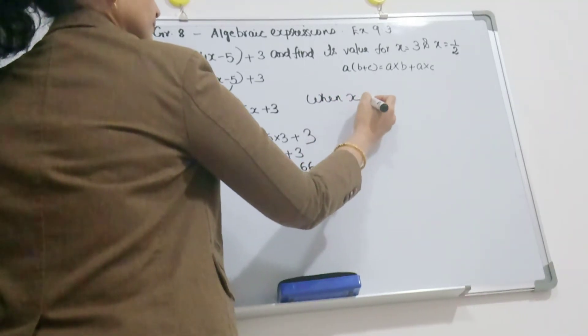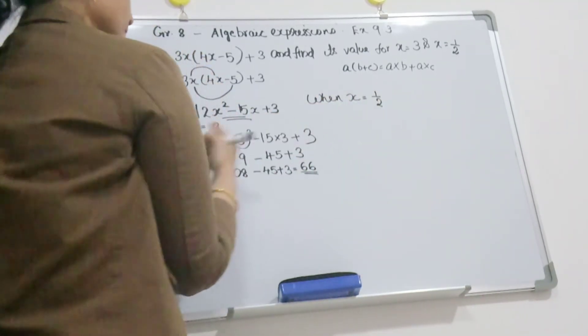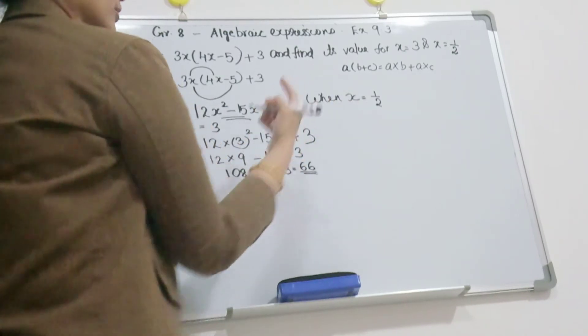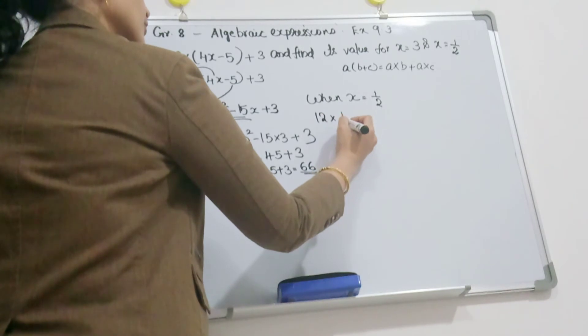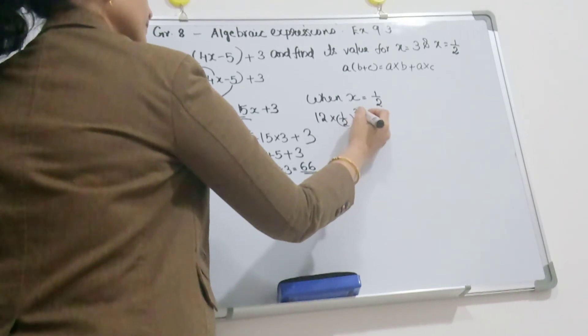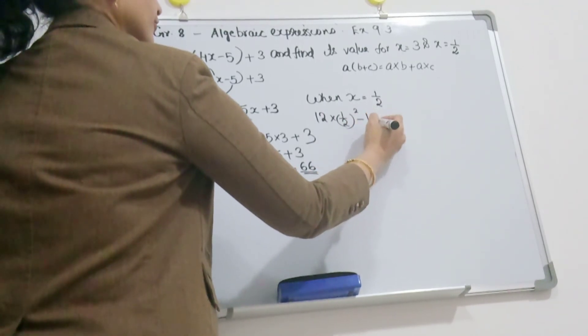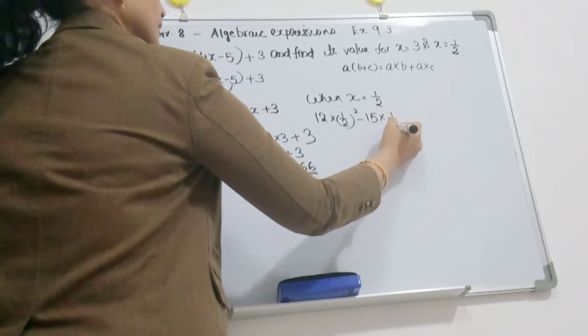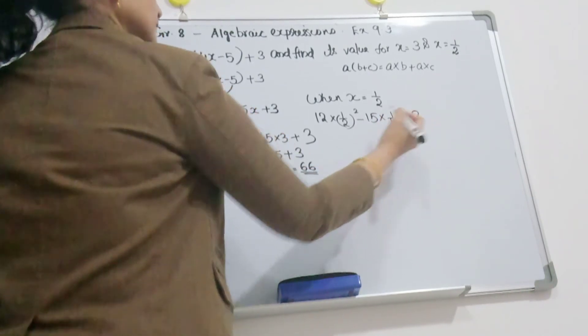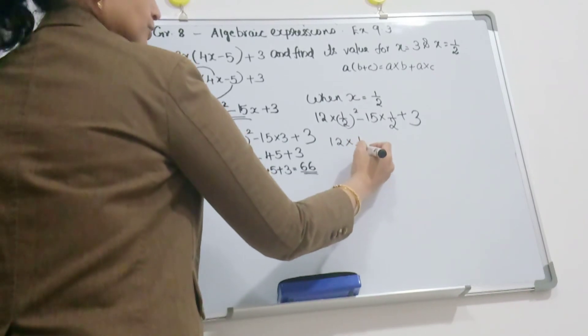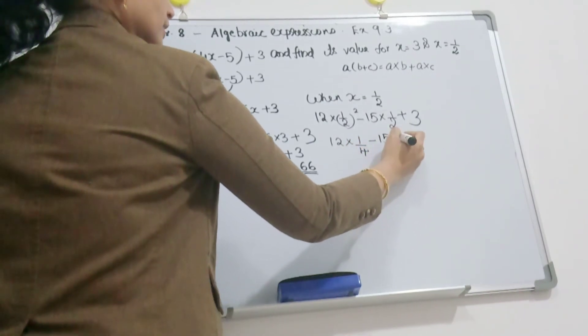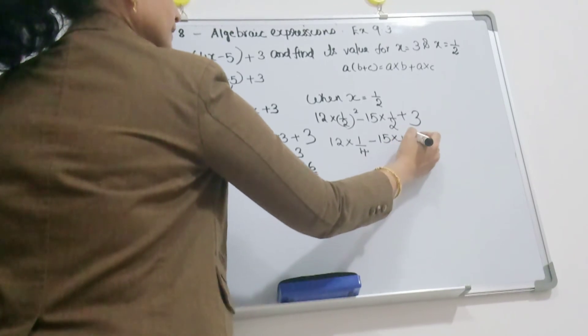Now when x is equal to 1 by 2, you substitute the value x equal to 1 by 2. So 12 into 1 by 2 the square minus 15 into 1 by 2 plus 3. So 12 into 1 by 2 square is 1 by 4 minus 15 into 1 by 2 plus 3.